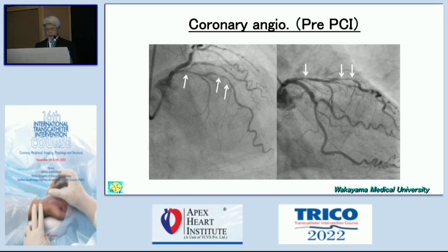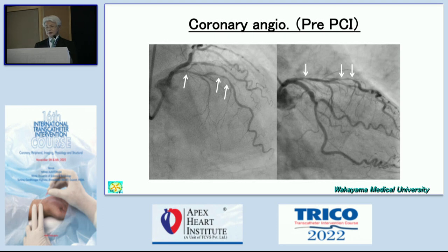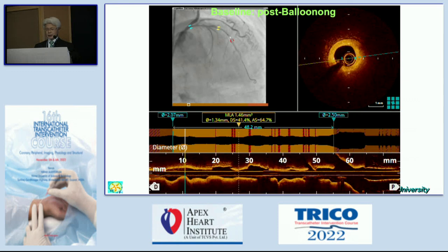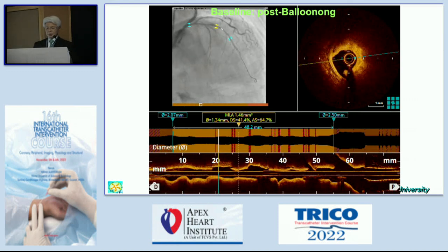In the case of a long diffuse region, you can identify from the proximal to the mid-LAD there are lots of disease over a very long segment. If you try to get a clear image by OCT, it is important to have enough diameter. If you push the OCT catheter under this condition, you cannot get a clear image. It is very important to do pre-dilatation using a 2.0 or 2.5 balloon. After that, you can get a clear image. This is a post-dilatation image.